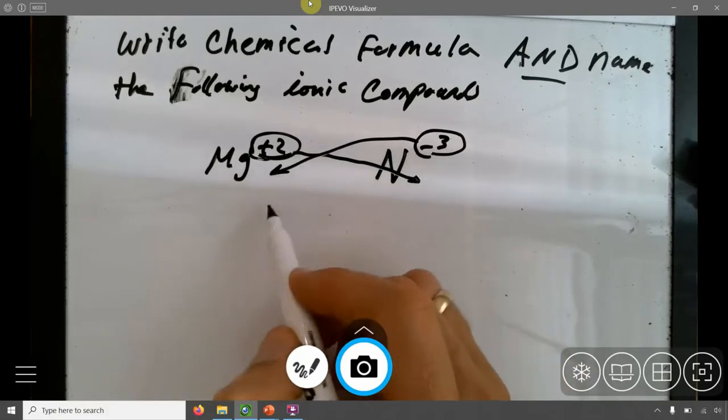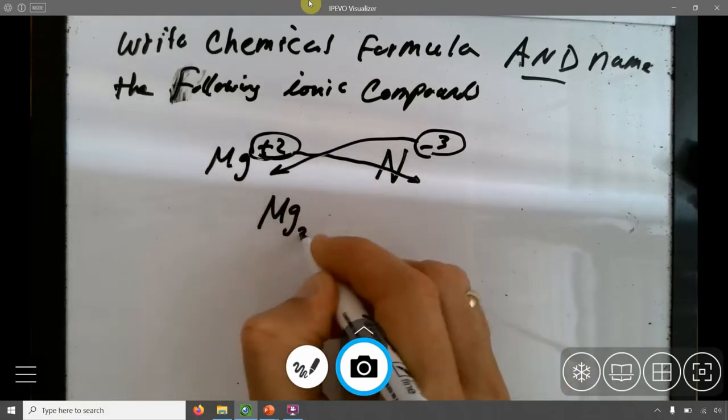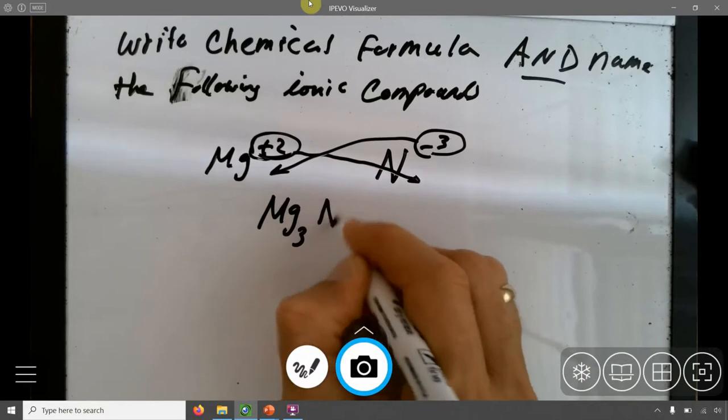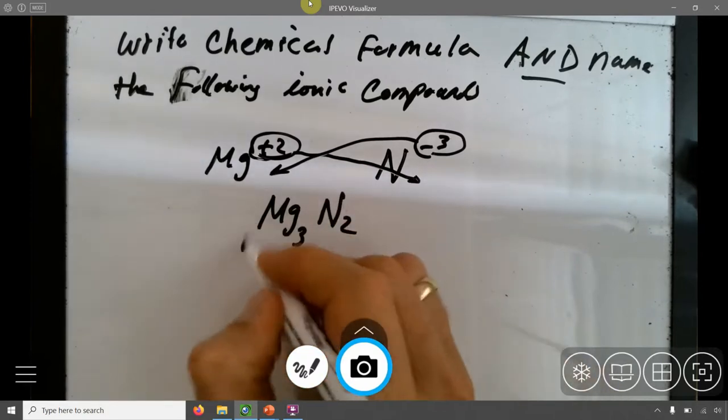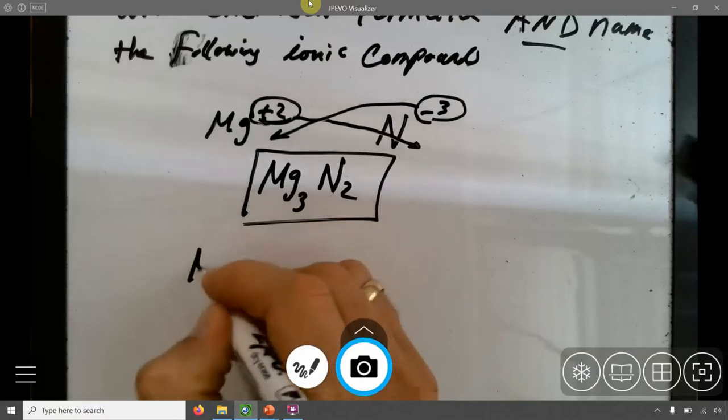Absolute value, not negative. You don't put Mg negative 3. That's ridiculous. Mg3N2. That is my compound. Mg3N2. Great. Now let's name this guy.